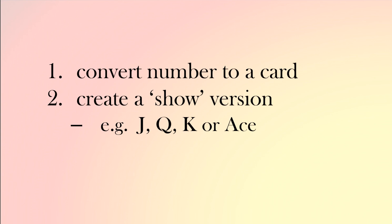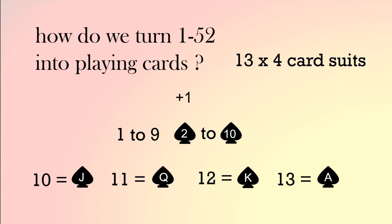We're playing higher and lower, which starts off with the lowest as two, up to jack, queen, king, ace. We need to convert the numbers one to 52 into a number we can play for higher or lower, and also show jack, queen, king, or ace where appropriate. There are four suits, but we don't really need to worry about the suit — we just need to worry about the number. The lowest number is one and the lowest card is two.